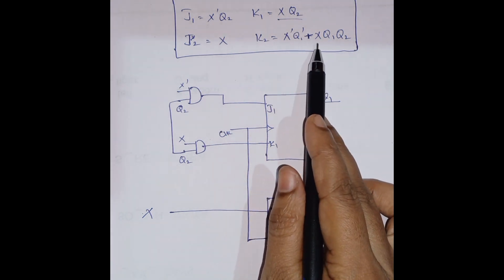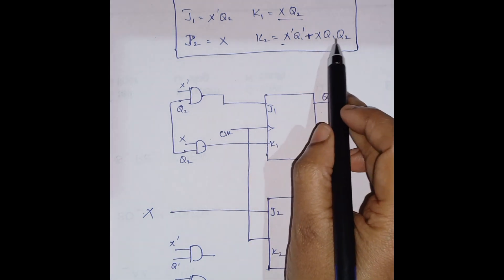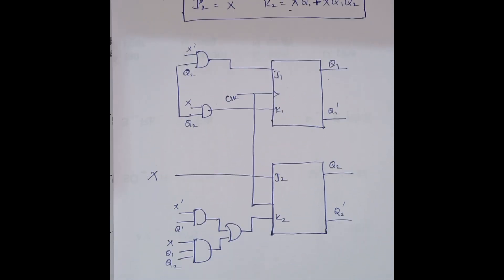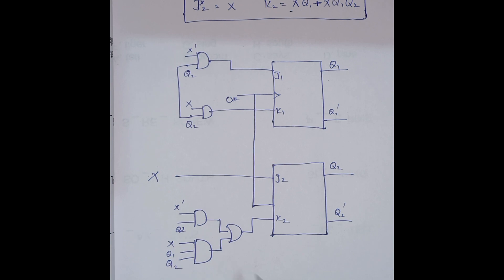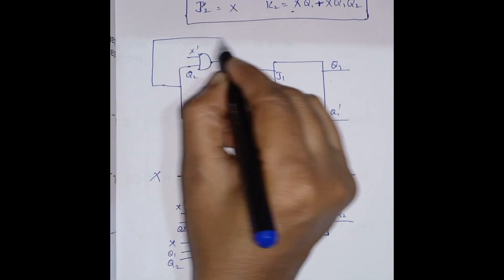For J2 = x, we connect x directly to J2. For K2 = x'Q1' + xQ1Q2, we need two AND gates and one OR gate. The first AND gate has inputs x' and Q1'. The second AND gate has three inputs: x, Q1, and Q2. Both AND gate outputs connect to an OR gate, whose output goes to K2.